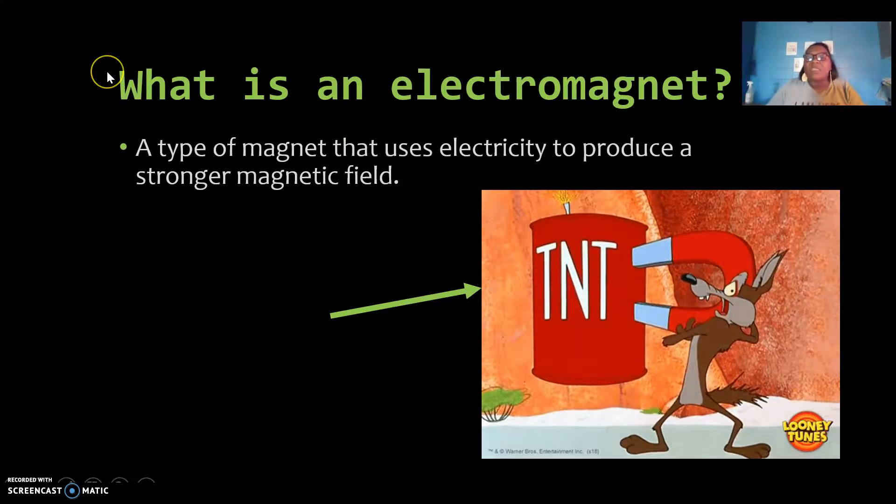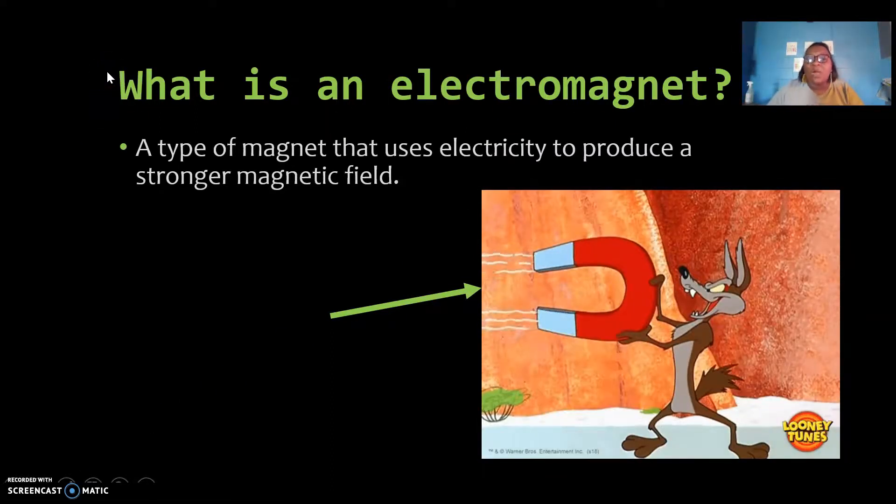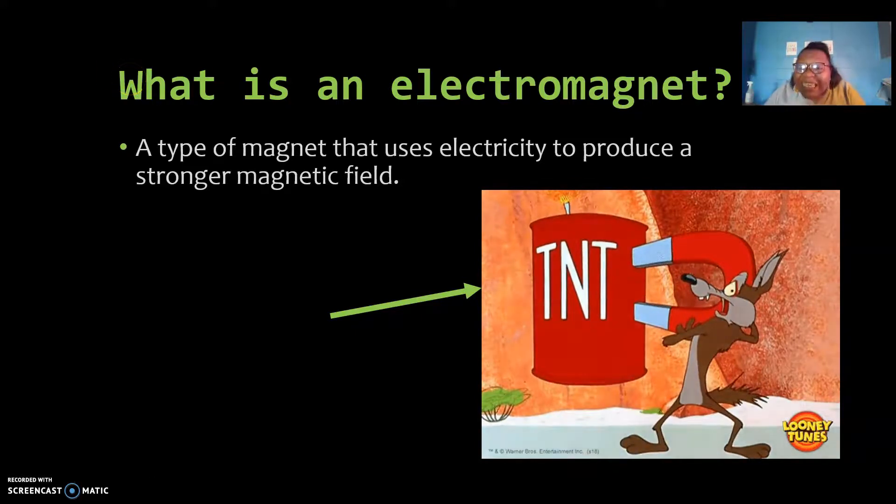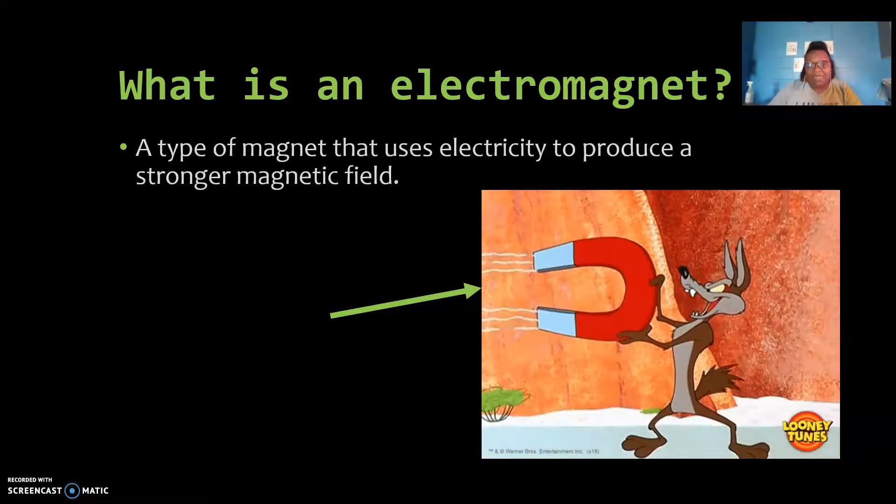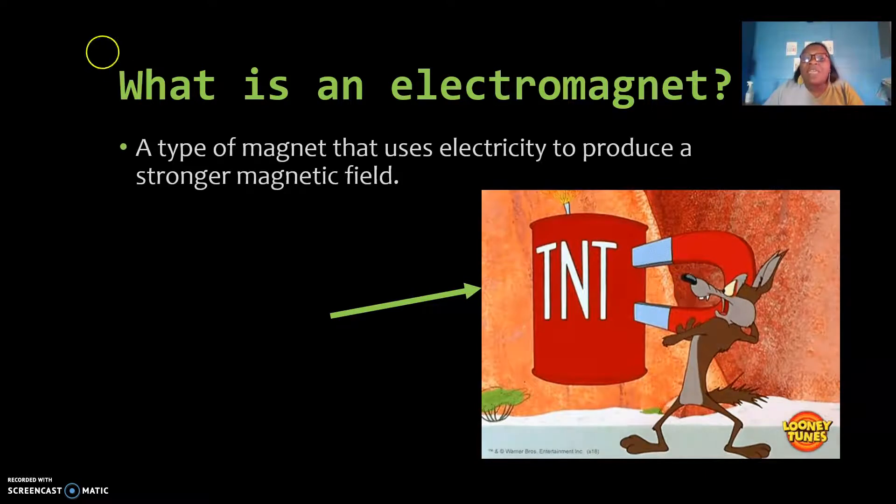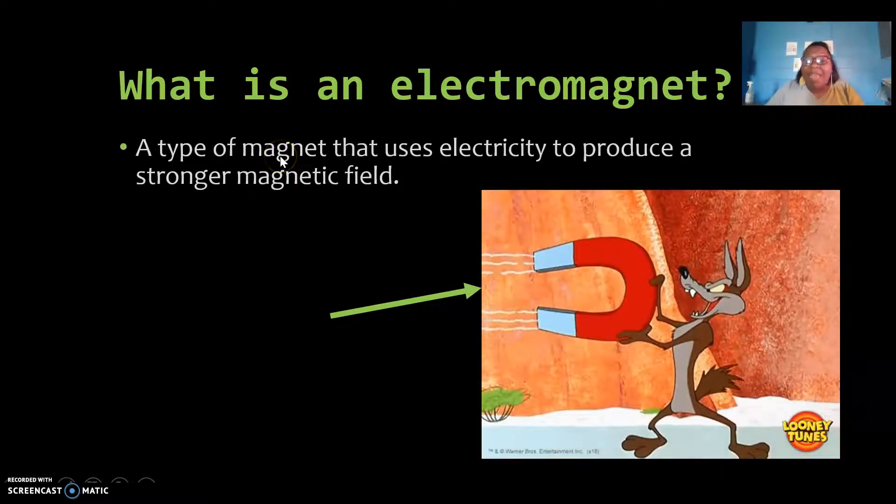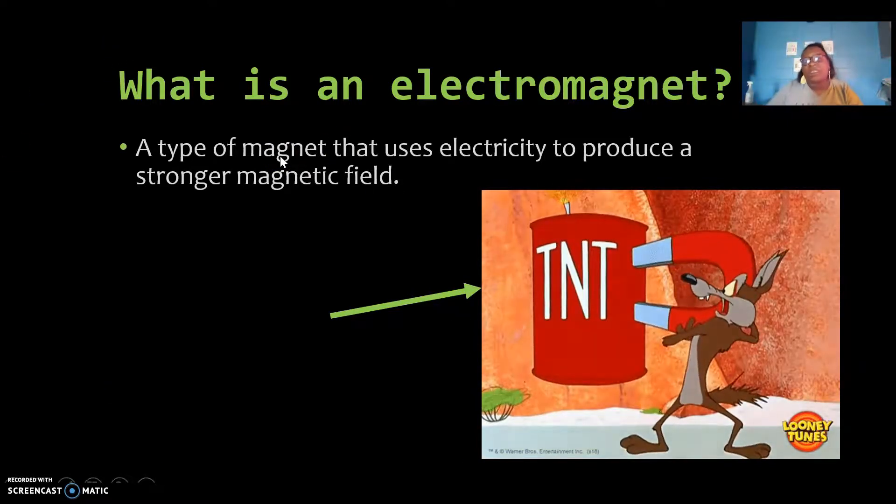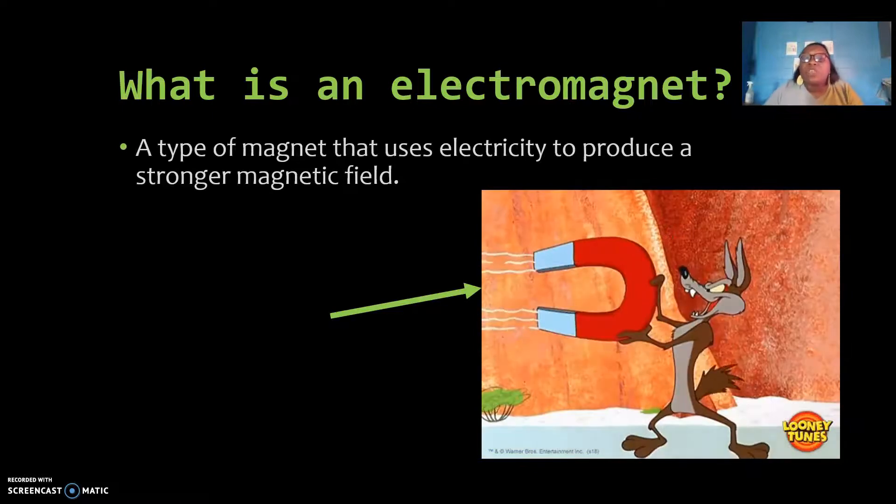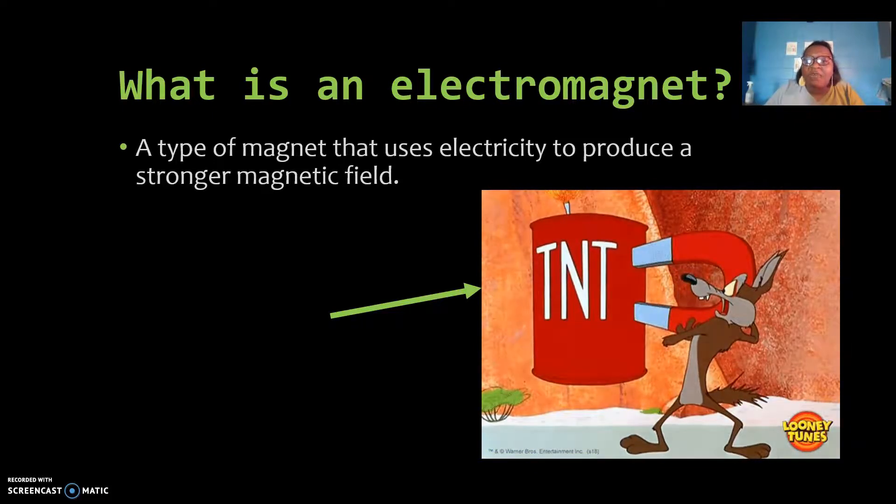So our first piece of our notes that we want to write down this question: what is an electromagnet? We need to know that an electromagnet is a type of magnet that uses electricity to produce a stronger magnetic field.